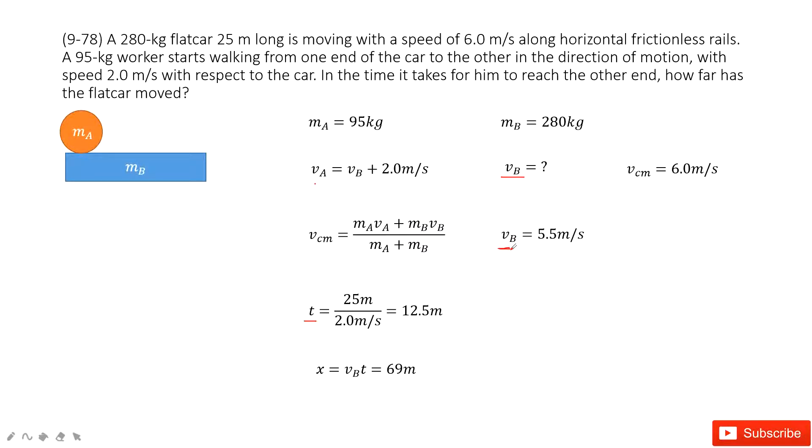Now, how can we find time t? It tells you the person moves from one end of the car to another end of the car with velocity 2 m per second. In this time, we take the reference point as car b.